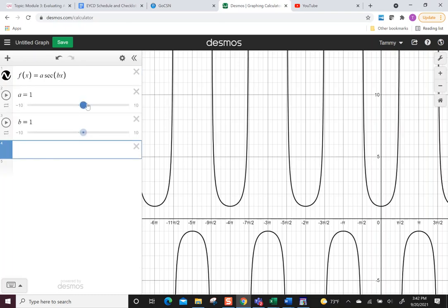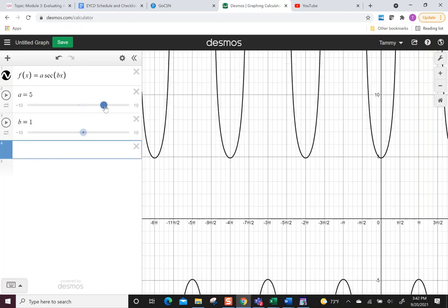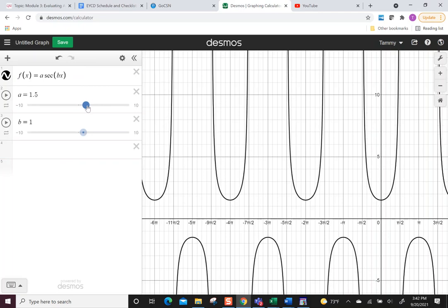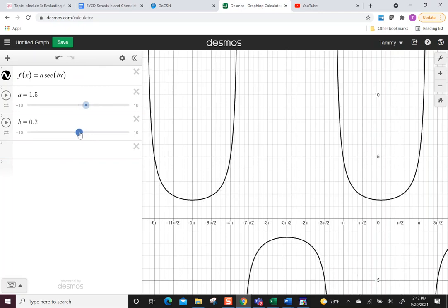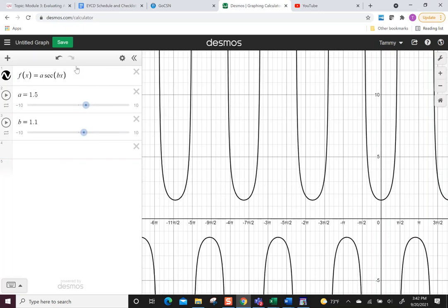So again, I could throw a slider in there to show you what happens with amplitude. Moves far away. The b, the period, changes what it looks like width-wise.